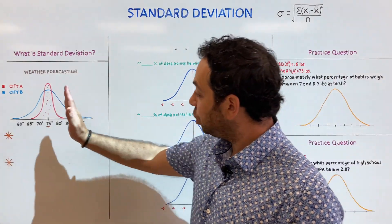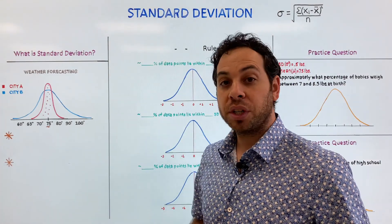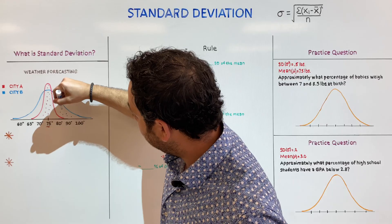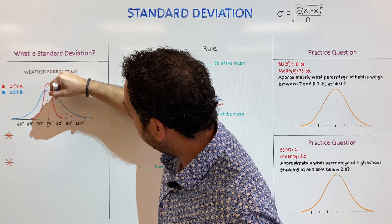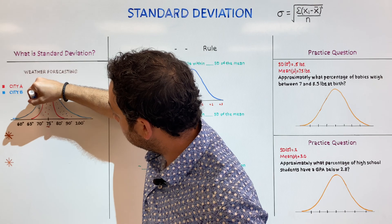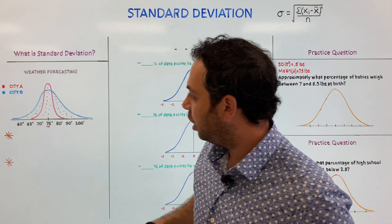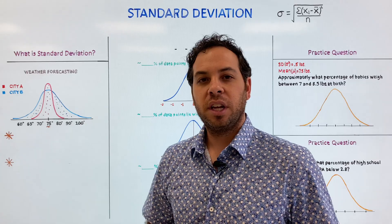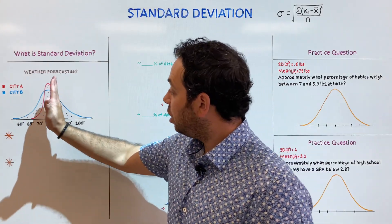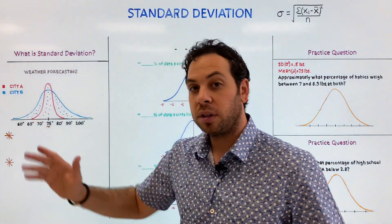Then we look at City B, which also has an average mean temperature of 75. But what do we notice? There are much more extremes. Yes, you can have a great temperature — in fact, even 90 to 100 degrees. But there's also a chance of very low temperatures. It could be 60 degrees on the beach, and nobody wants that. So, what does this have to do with standard deviation? Well, standard deviation tells us how far away — how spread out — data points are from the mean, either above or below.